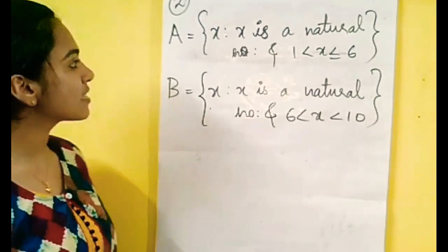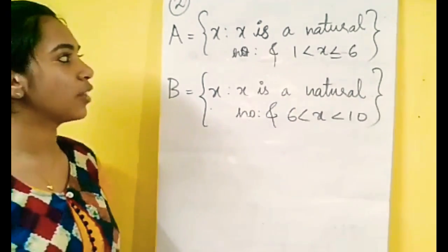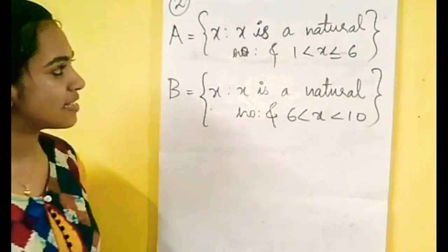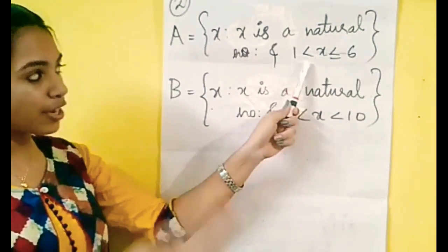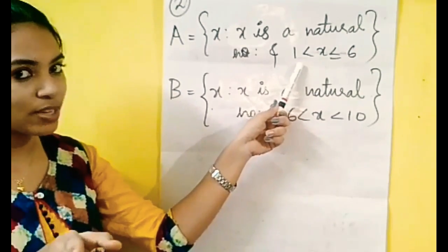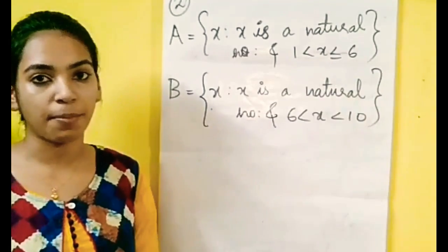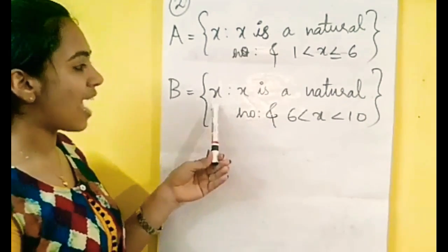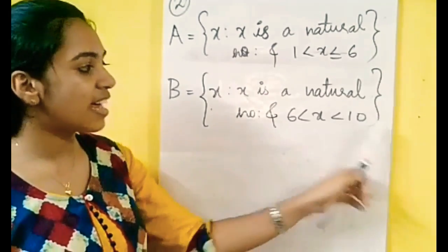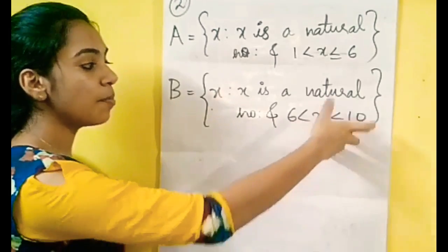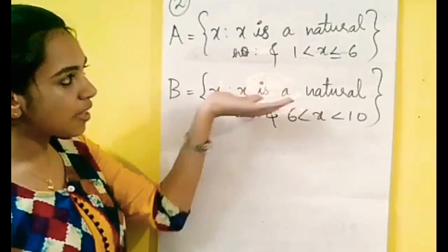Let us take set A = {x : x is a natural number and 1 < x ≤ 6}. Then the elements present: x is a natural number, so the numbers are 2, 3, 4, 5, 6 — since 1 is not included but 6 is included. Now set B = {x : x is a natural number and 6 < x < 10}.